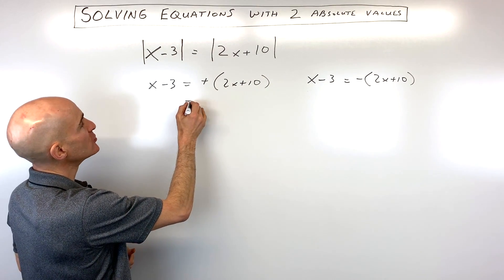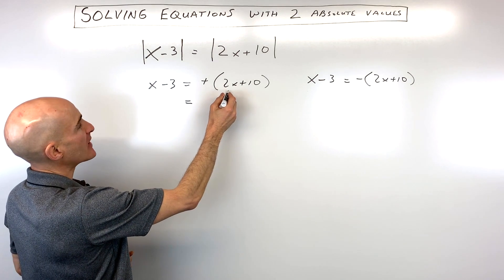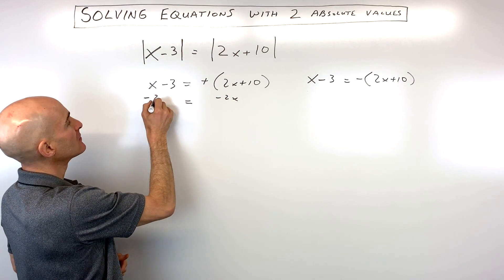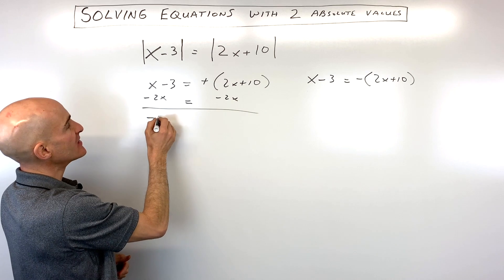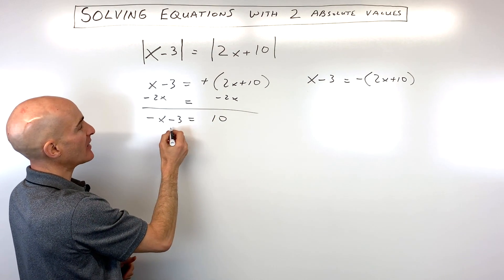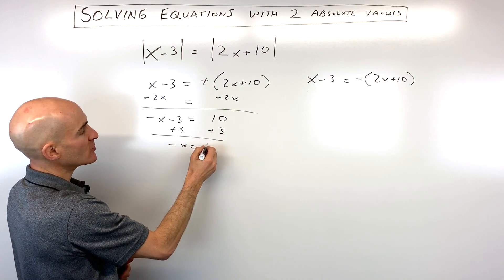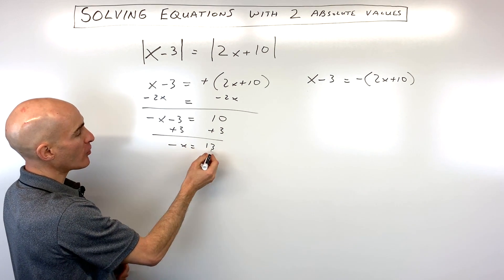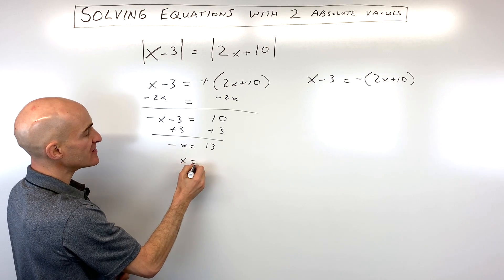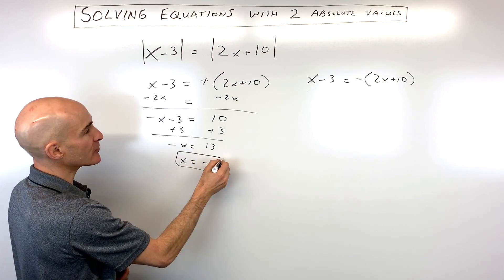I'm going to subtract 2x from both sides. So that gives us negative x minus 3 equals 10. I'm going to add 3 to both sides. So we've got negative x equals 13, and if I multiply both sides by negative 1, you can see that x is equal to negative 13.